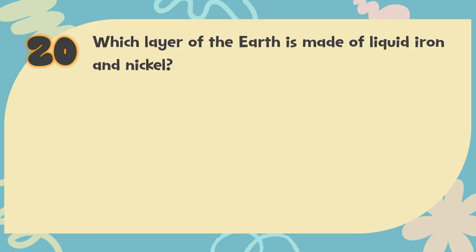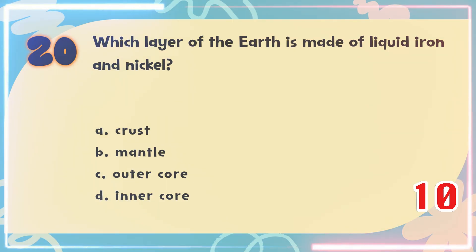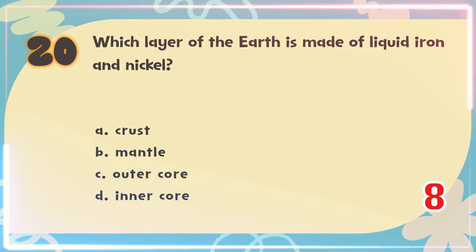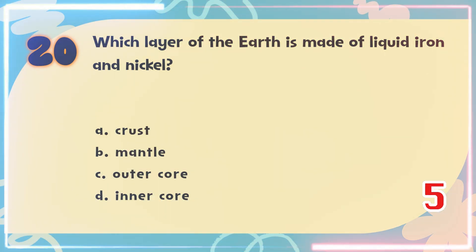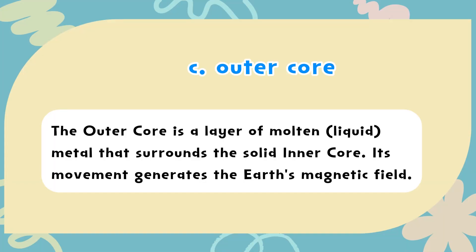Number 20. Which layer of the earth is made of liquid iron and nickel? The choices are: A. Crust, B. Mantle, C. Outer Core, D. Inner Core. The correct answer is C. Outer Core. The outer core is a layer of molten liquid metal that surrounds the solid inner core. Its movement generates the earth's magnetic field.